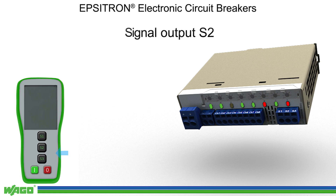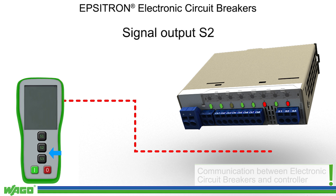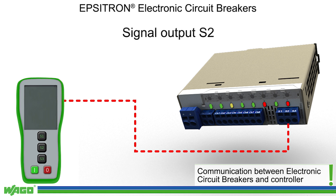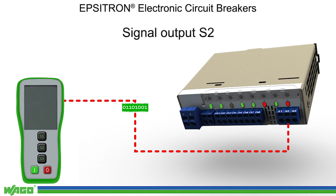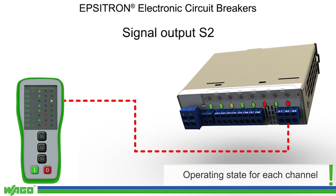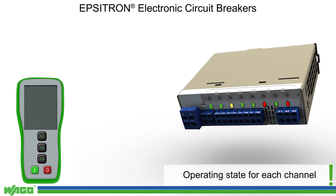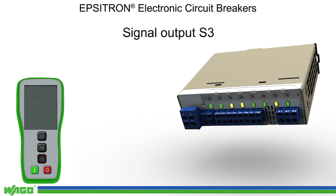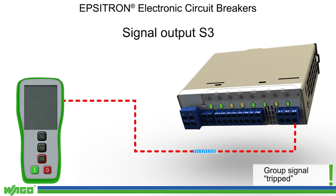Signal output S2 provides information about the operational status of each channel. The PLC receives a binary coded pulse pattern from the ECB, including operating status, input voltage, set nominal current, or for the variant with current limitation, the momentarily applied current for each channel.